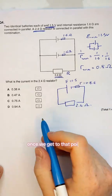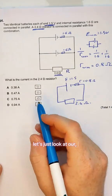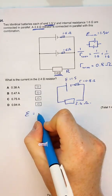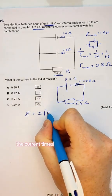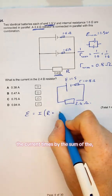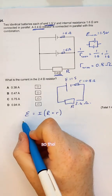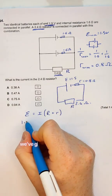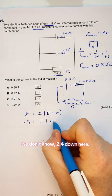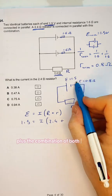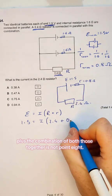Once we get to that point, let's look at our EMF equations. We know from our equation sheet, EMF is equal to the current times by the sum of the resistances in the circuit plus the internal resistances. So let's plug our numbers in. We've got 1.5 equals the current we don't know, 2.4 down here, plus the combination of both those together is 0.8.